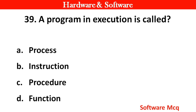Question 37: A program in execution is called? Options: A. Process, B. Instructions, C. Procedures, D. Functions. Right answer is option A — Process.